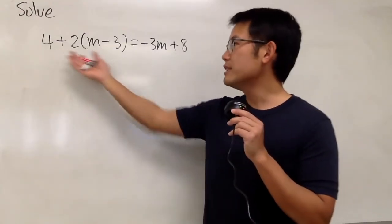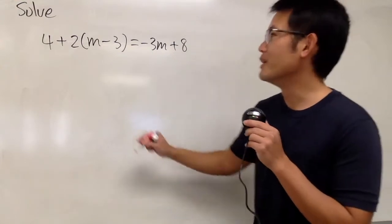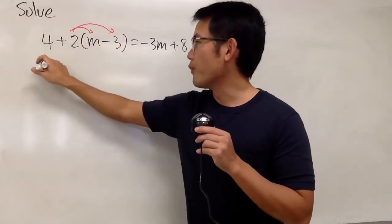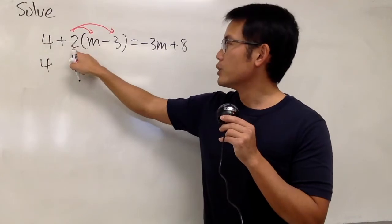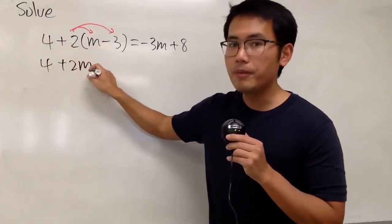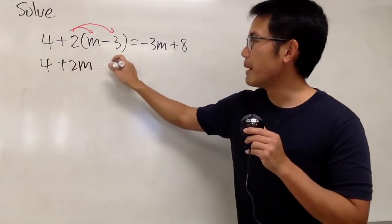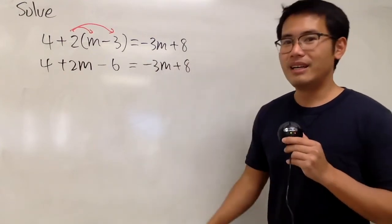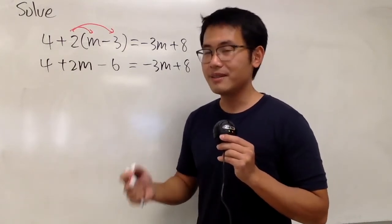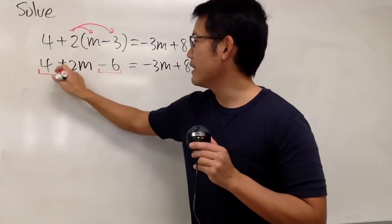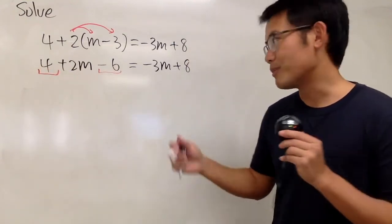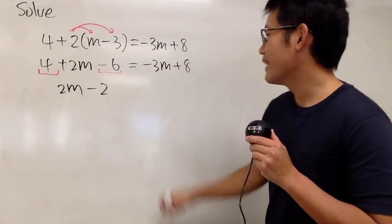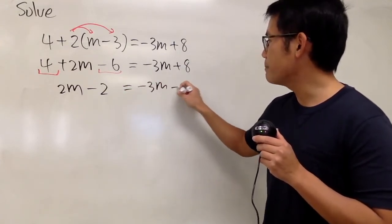We'll solve this equation and we see that we have a parenthesis, so go ahead and work that out first. I will take the positive 2 and distribute. We have the 4 — write it down — and then: 2 times m is just 2m, that's positive, so we have plus 2m. And then positive 2 times negative 3, we get minus 6. The right-hand side we just write down as is. Now on the left-hand side, ask yourself: can you combine anything? Yes — 4 and minus 6. Let me put down the 2m first, and then 4 minus 6 gives us negative 2. On the right-hand side, we have negative 3m plus 8.